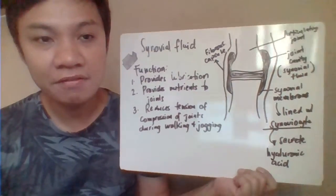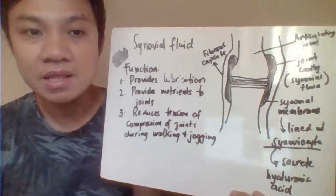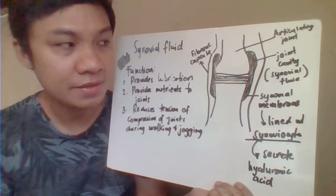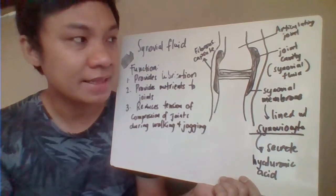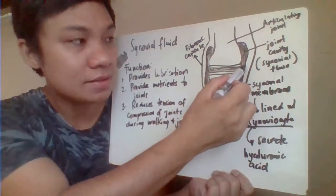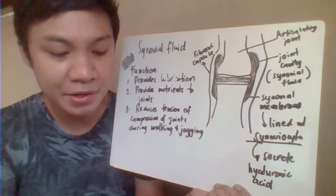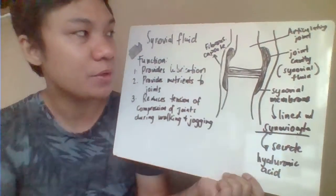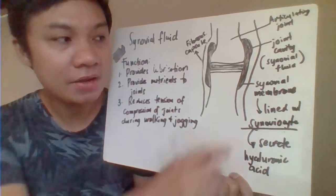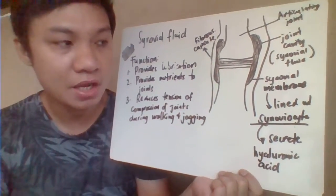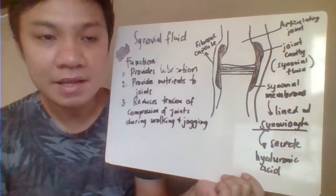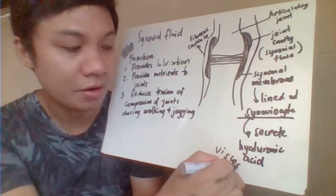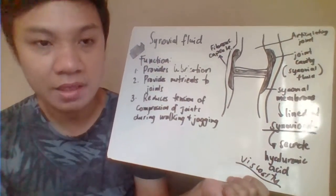Your synovial fluid, or joint fluid, is a fluid that can be found within your synovial cavity. Your synovial joints — the bones — are lined by your synovial membrane, which lines your synovial cavity. The synovial membrane is enclosed in a capsule called your fibrous capsule. The synovial membrane is lined by a specialized cell called your synoviocyte, and the synoviocyte is the one that secretes your hyaluronic acid, which is responsible for providing viscosity to our synovial fluid.